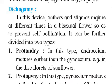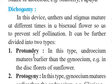This device can be further divided into two types. The first is protandry. The example I just described is protandry — in this type, the androecium matures earlier than the gynoecium. In the case of the disc florets of sunflower, the androecium matures earlier than the gynoecium.